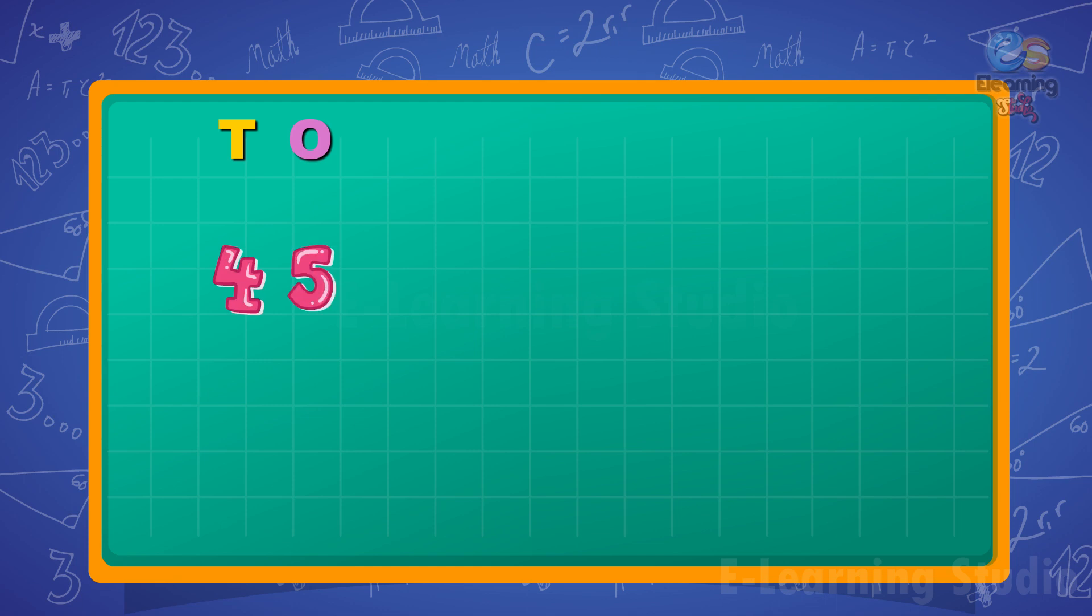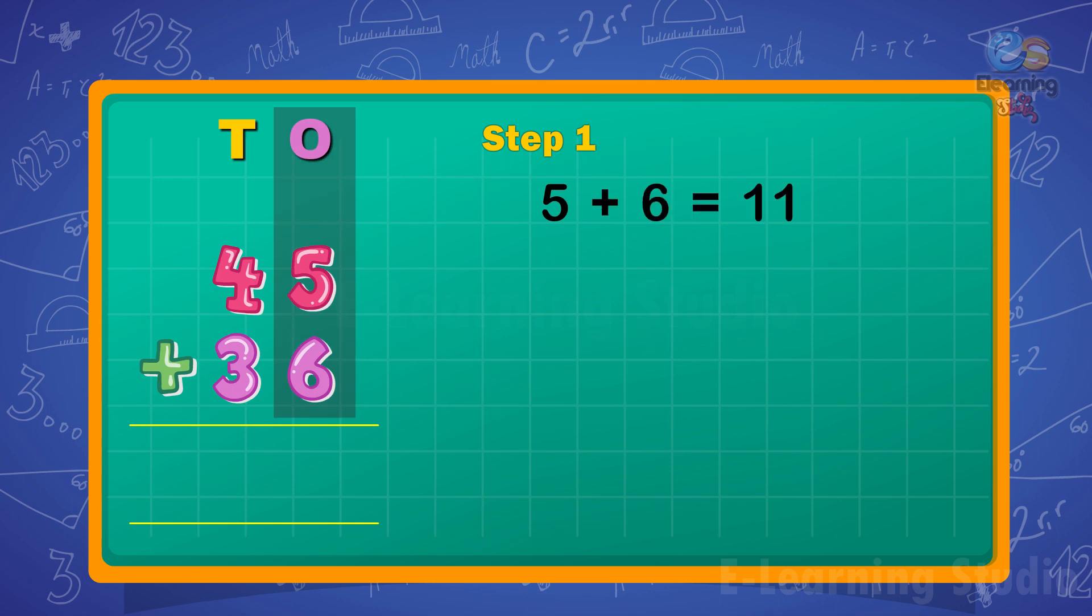Add 45 plus 36. Step 1: First add the ones. 5 plus 6 is equal to 11 ones. Write 1 under the ones column.